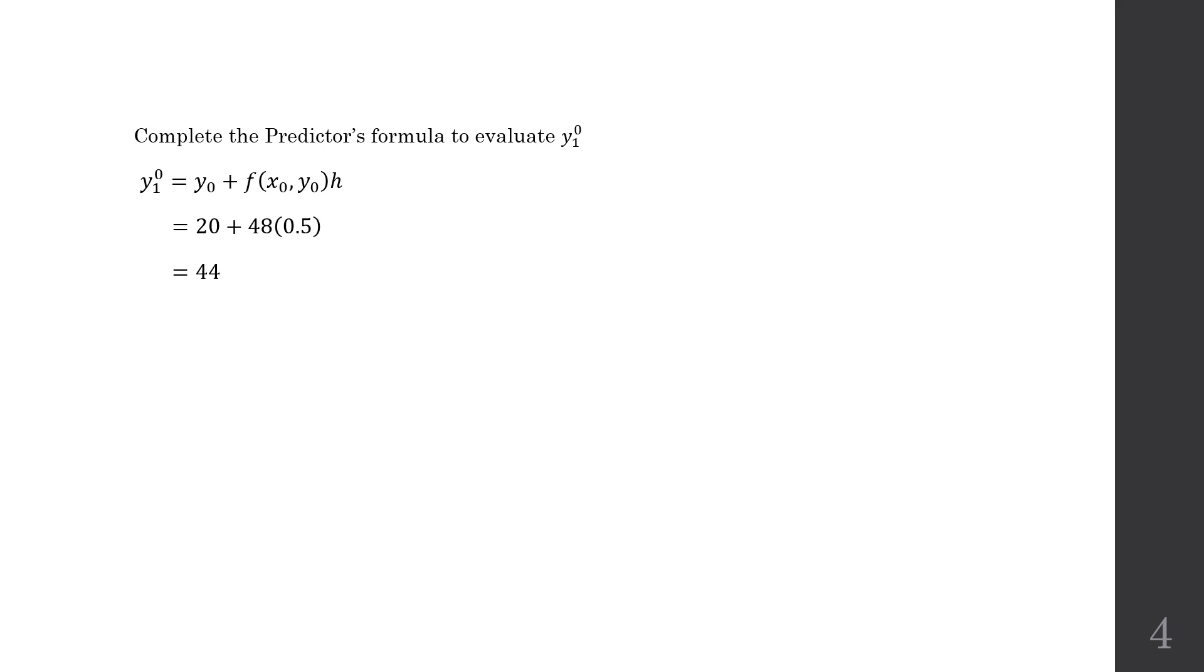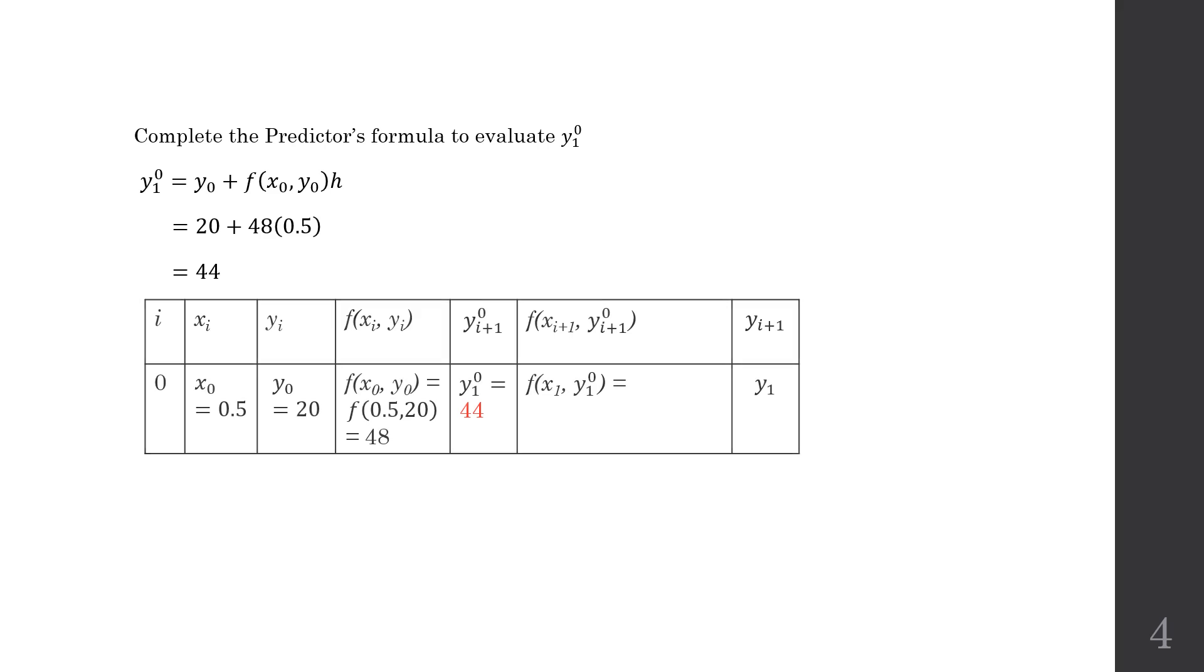So y1* is actually the temporary value which later will be used in the corrector's formula. Let's update the value of 44 into the y1*.